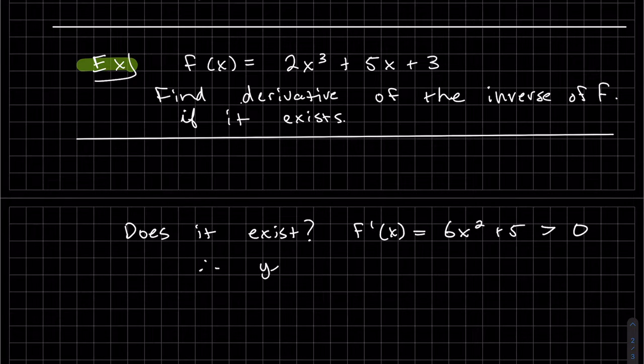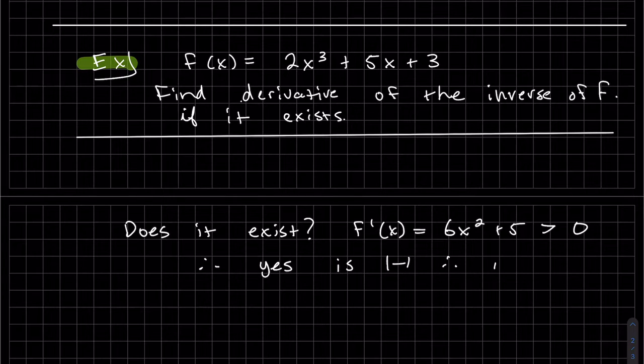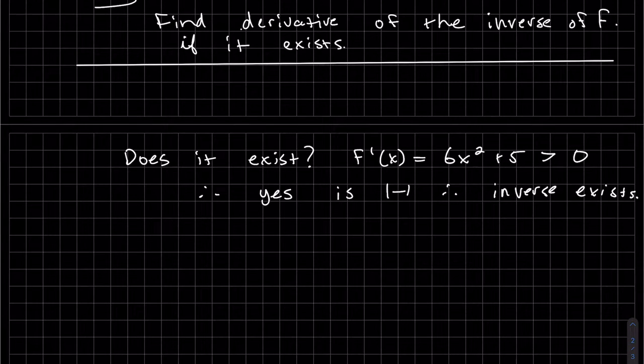Therefore, yes, is one to one. Therefore, inverse exists. So we're going to find the inverse and then take the derivative of it. So our function, this is our function. We'll change that to y.